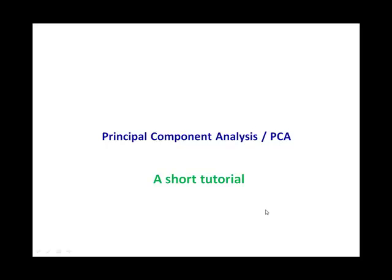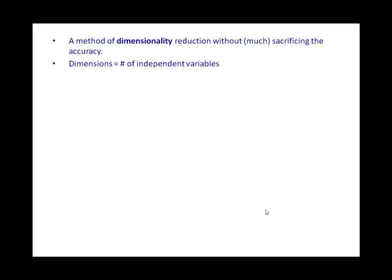Principal Component Analysis or PCA - these are part of the 'What Is It' series available in this channel. What is PCA? It's a method of dimensionality reduction without much sacrificing the accuracy. Dimensions - what is the meaning of dimension? Dimension is nothing but the number of independent variables.